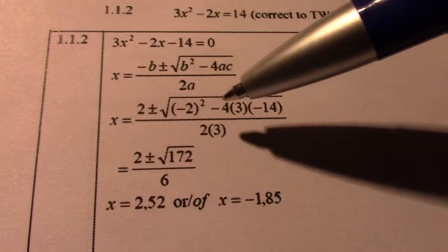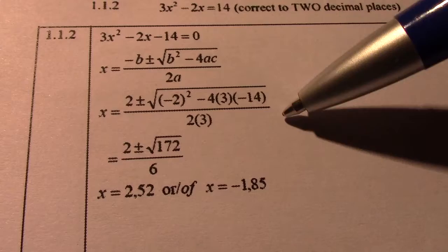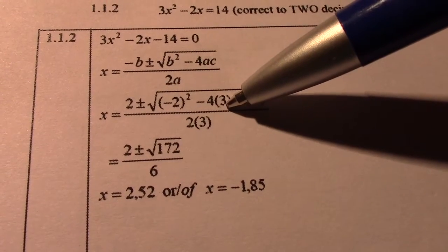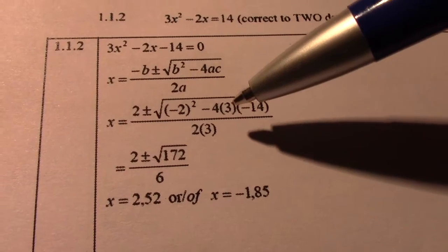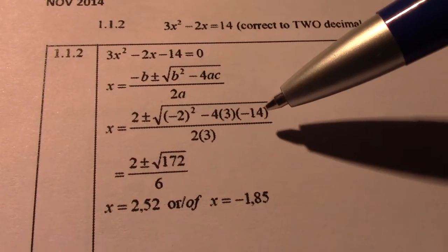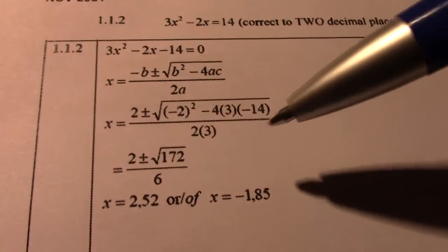All right, so from there, negative 4 times negative 14 gives me 40 plus 16, 56. 56 times 3, 150, 158... all right, plus 4. No, 168 plus 4, which gives me 172.